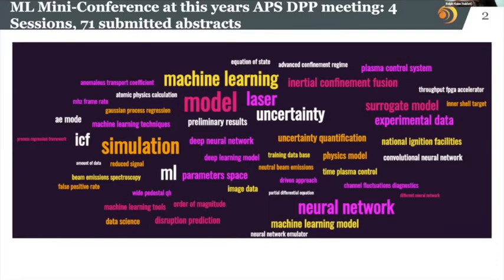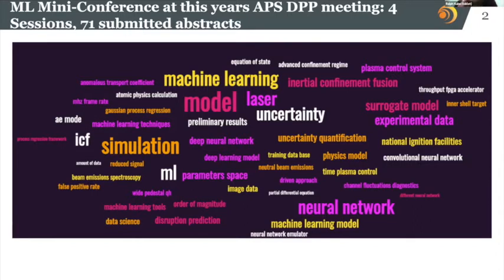It came to my mind that there will be a machine learning mini conference at this year's American Physical Society Division of Plasma Physics meeting. This is quite a big meeting — there will be four sessions: three oral sessions and one poster session with over 71 submitted abstracts. To illustrate the breadth of the field, I took all the abstracts from that meeting and generated a word cloud, stripping away all filler words. How large a word appears gives you a sense of the frequency these words appear. Fusion energy sciences can be roughly separated into magnetic confinement and inertial confinement fusion, and this mini conference covers both.